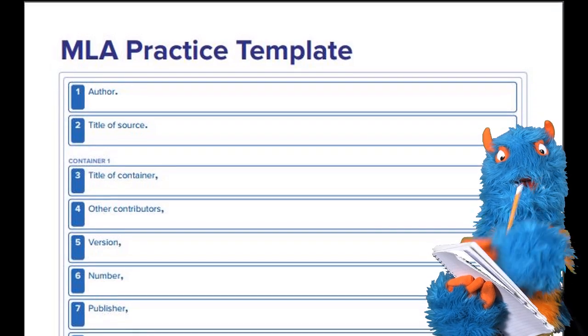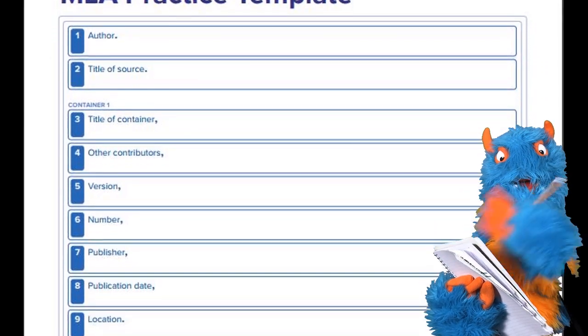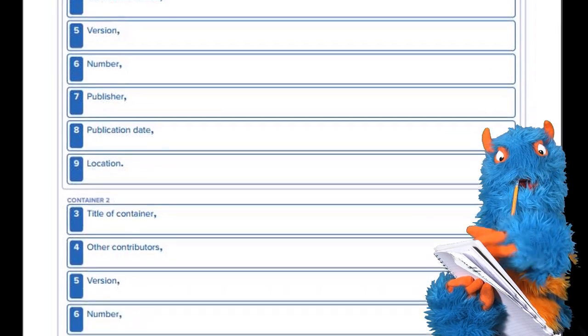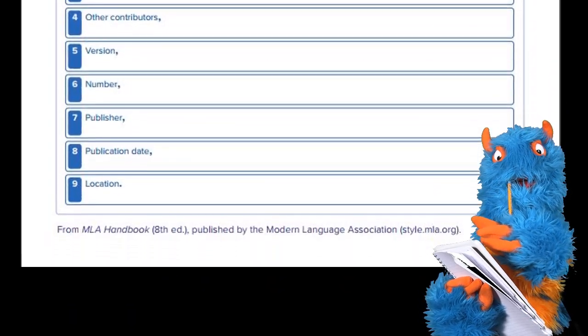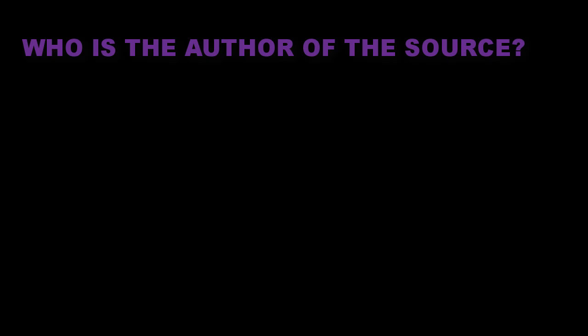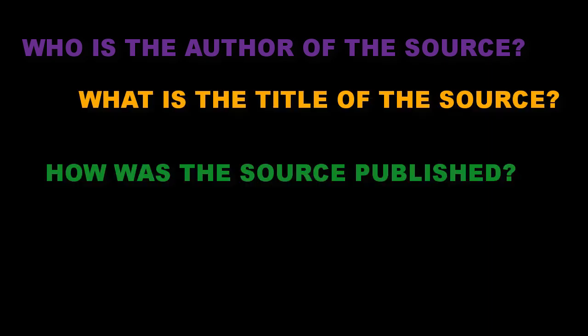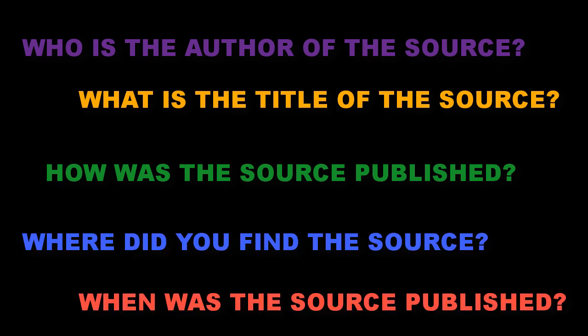Don't worry about filling all the template's fields. The idea is to get the citation as complete as possible so that the reader can refer to your sources. To gather information, ask yourself the following: Who is the author of the source? What is the title of the source? How was the source published? Where did you find the source? When was the source published?